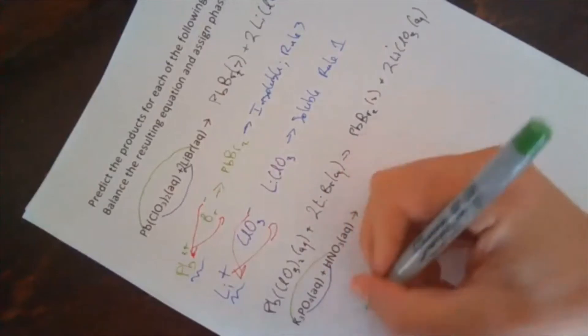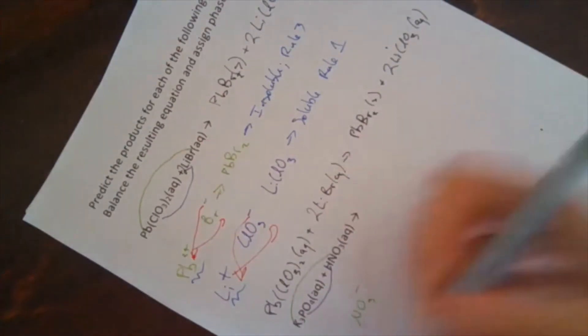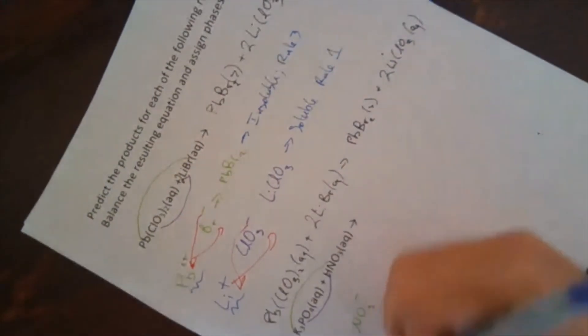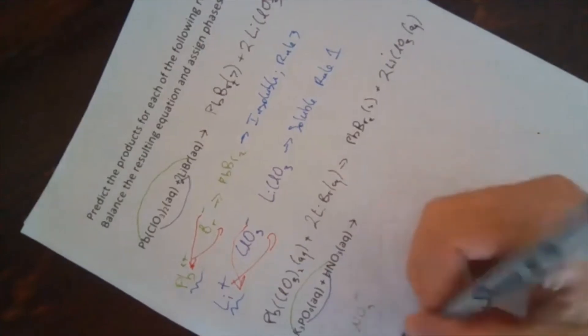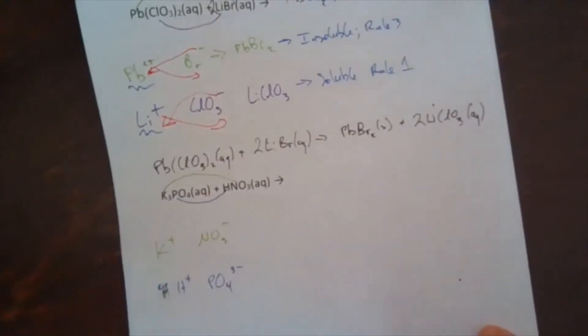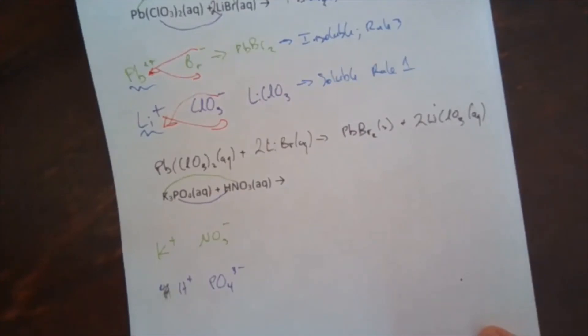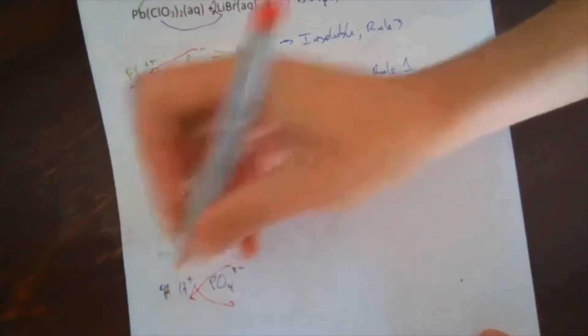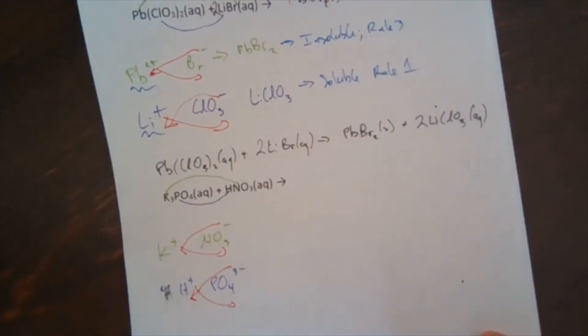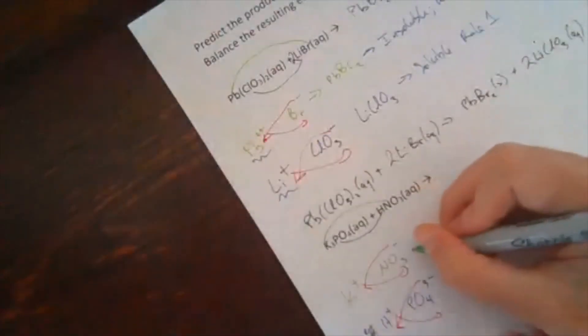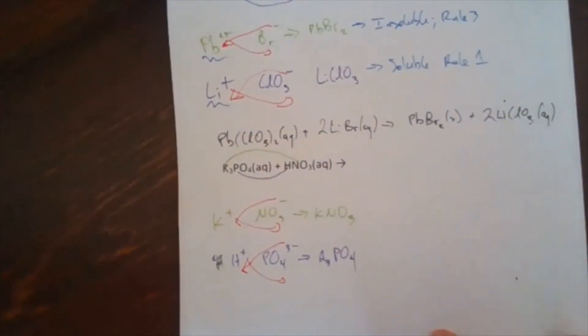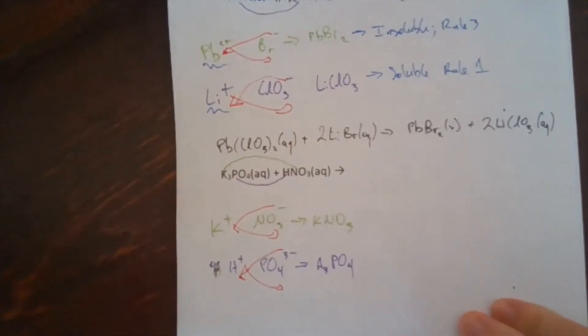So our ions, we have K+ and NO3-, and then H+ and PO4 3-, same idea. So I'll do my crossover. One and one there, one and three on that one. So this becomes KNO3. And this becomes H3PO4. Those are the products that we make.